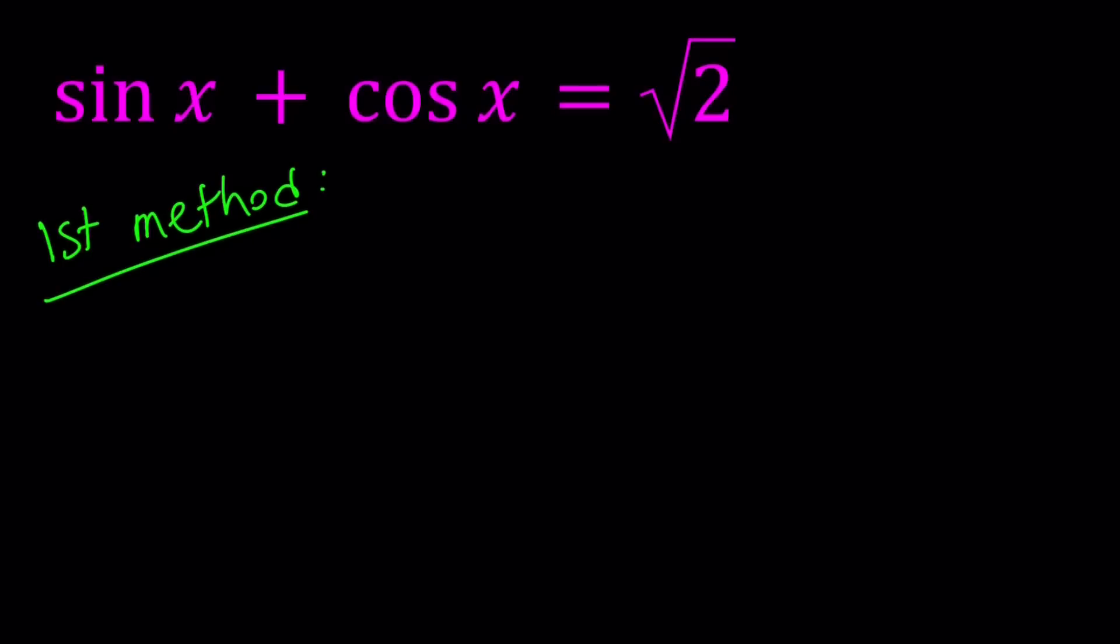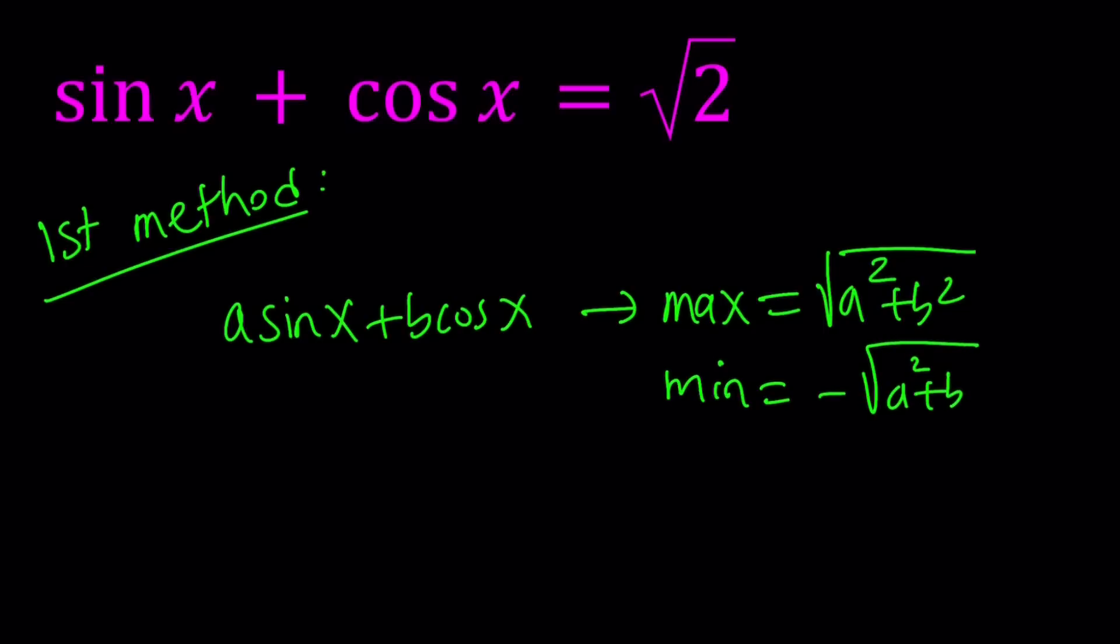For my first method, I'm going to do the following. First of all, if you study trigonometry and know about maximum or minimum of a function, you've probably seen something like this: a sine x plus b cosine x. The maximum value for this function expression is square root of a squared plus b squared, and the minimum is the opposite of this. It's always going to take values between those two numbers. But let's leave it aside and solve this problem.